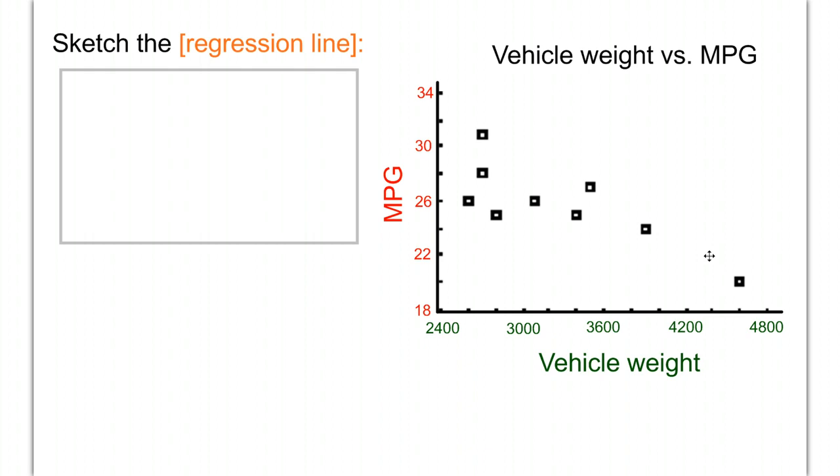Based on this general trend, heavier cars tend to have lower miles per gallon. That seems to make sense at first glance. This is the data we're going to be working with.